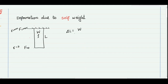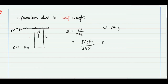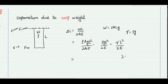The change in length formula for this bar is WL/2AE, where W is the weight. We can also write this by replacing W with ρALg, giving ρAGL²/2AE, which simplifies to ρGL²/2E. Replacing ρG with weight density γ, the formula becomes γL²/2E. Lastly, defining λ as mass per unit length (λ = ρA), the formula becomes λGL²/2AE. All four of these formulas are important for exams.